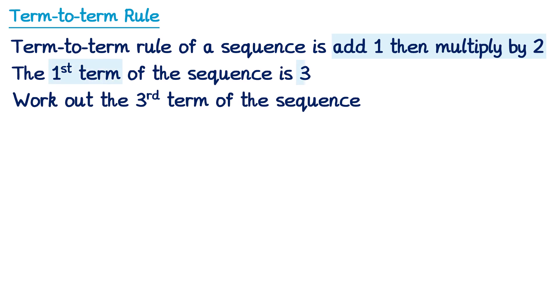The first term of the sequence is 3, so let's write that down, and we're looking for the third term, so we need to do the term-to-term rule two more times. So it's in two parts, remember. We're going to start with the first term of 3, but then to do the term-to-term rule we add 1, which will give you 4, and then we multiply this by 2, and 4 multiplied by 2 is 8.